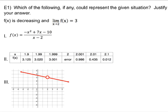So let's start with Example 1. Which of the following, if any, could represent the given situation? So the given situation that we're talking about is two things. Number one, f is decreasing. So there's two things we're looking for. We're looking for f is decreasing, and we want the double-sided limit as x approaches 2 to be 3. So we're looking for two things: decreasing and the double-sided limit at 2 is 3.